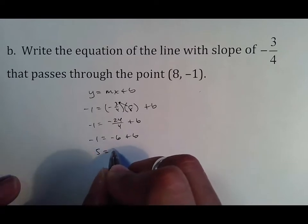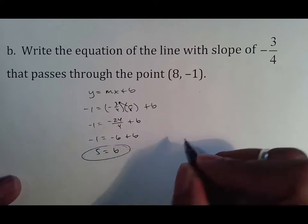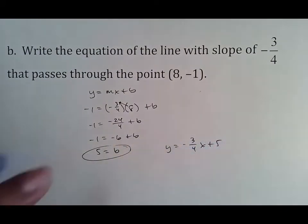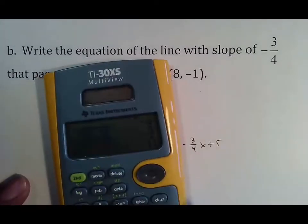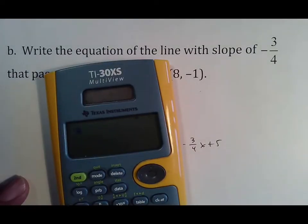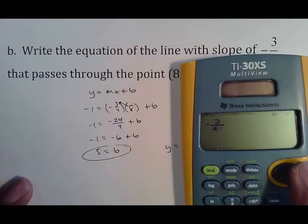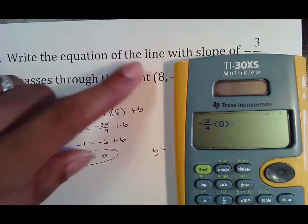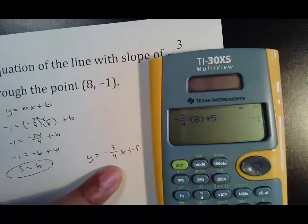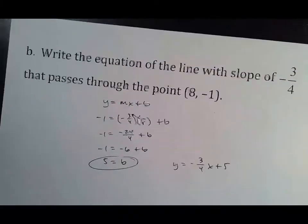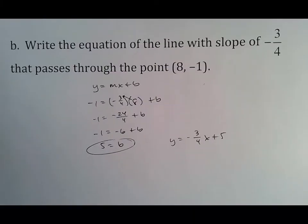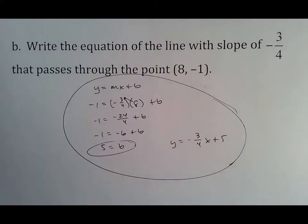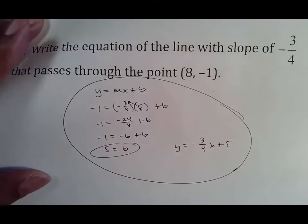So −1 = −6 + b. Add 6 to both sides: b = 5. The final equation is y = −(3/4)x + 5. To check on the calculator: −3/4 times 6... wait, times 8 plus 5 equals −1. That's the answer we need, so it works. Always show this work — I won't give credit without it.